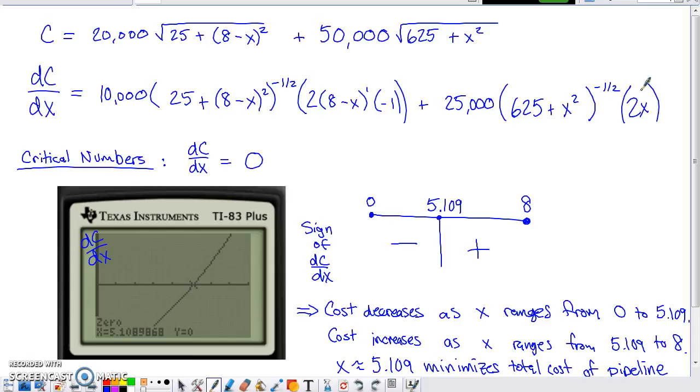I'm looking for critical numbers, so I realized that I want to set my derivative equal to zero. When I set my derivative equal to zero, I didn't want to try to solve that by hand. So I went ahead and graphed my derivative on the calculator, found when the graph was zero, and that happened at 5.109.